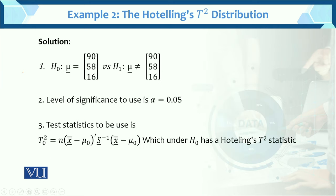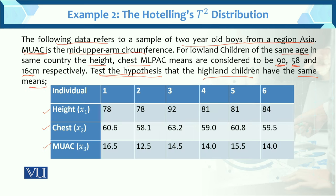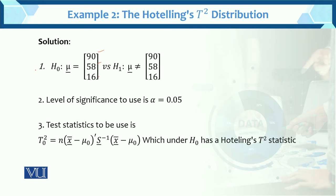The first step is to construct the hypothesis: H0: mu equals (90, 58, 16) — this is the population mean, the predefined value — and H1: mu is not equal to the predefined value, mu-naught. The second step is the level of significance: alpha is given as 0.05, this is the level of significance.